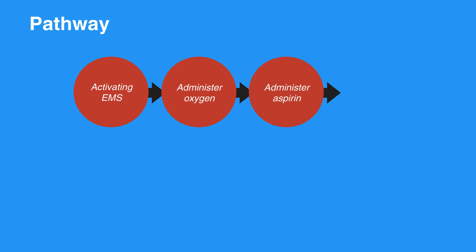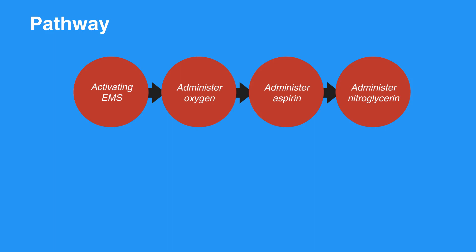Administer nitroglycerin: give 0.3 to 0.4 milligrams sublingual per spray, times two doses at 3 to 5 minute intervals. Do not use if systolic blood pressure is less than 90 mmHg. Do not use if a phosphodiesterase inhibitor, like Viagra, has been taken within 24 hours.